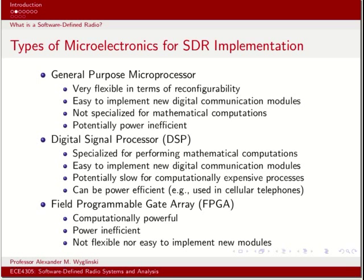As you can see, there are both pros and cons to each of these processor types. In this course, we'll focus on using a general purpose microprocessor to implement software-defined radio designs entirely using a commercially available software suite called Simulink, which will implement digital communication systems and then use a software-defined radio connected to them to transmit signals over the air to another radio.